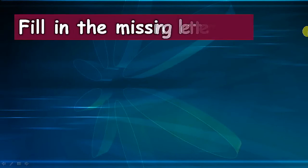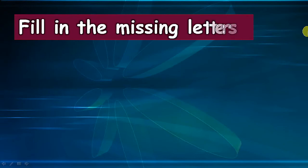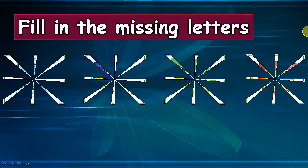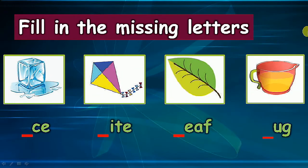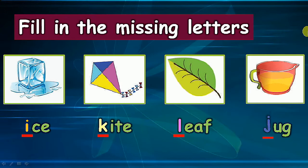Fill in the missing letters. I for ice, K for kite, L for leaf, and J for jug.